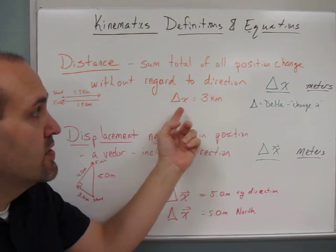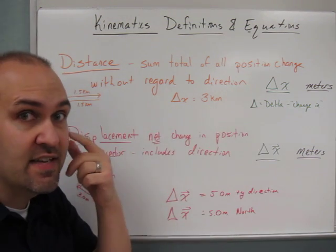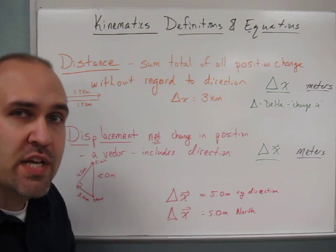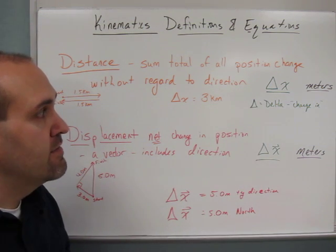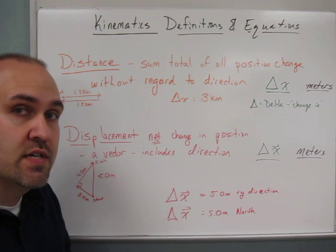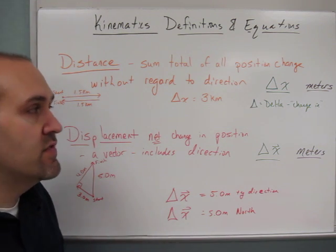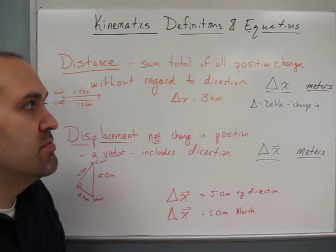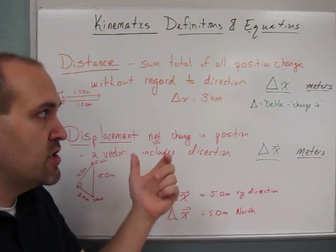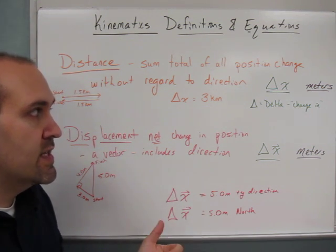The symbol that we use for distance is a delta X. That Delta is a Greek letter, capital Delta, and that just means change in. So anytime you see the Greek letter Delta, that means change in whatever follows afterwards. And X is the symbol that we use for position, so the change of position, delta X, that's what we use for distance and it's measured in standard SI units of meters.